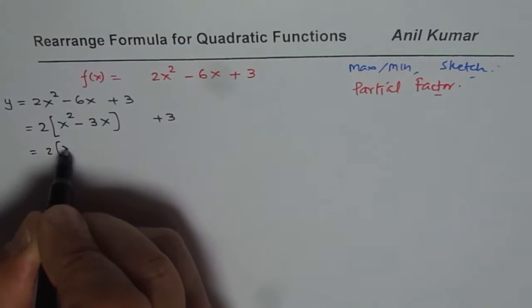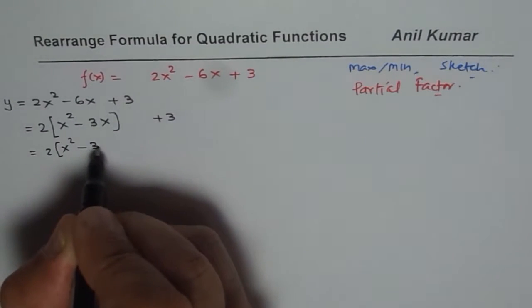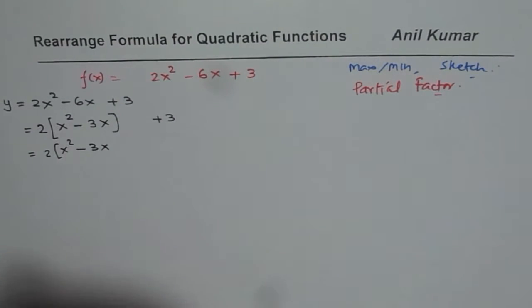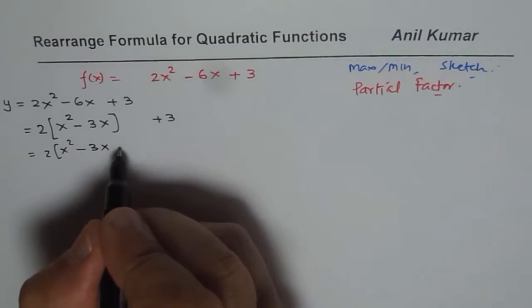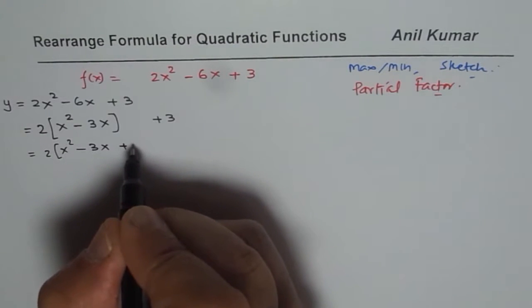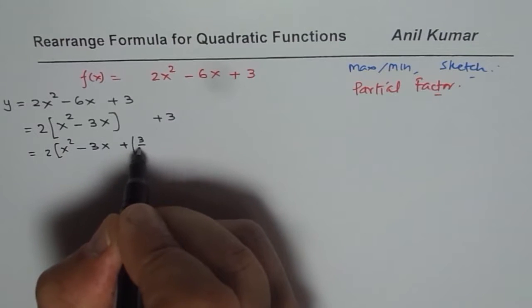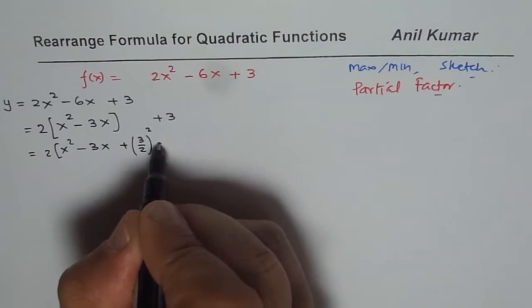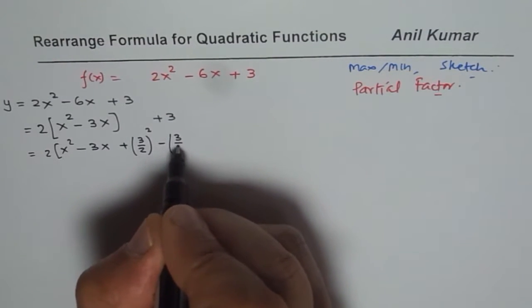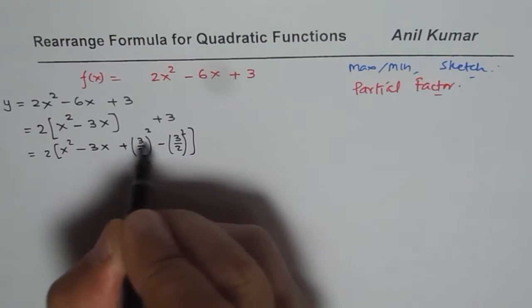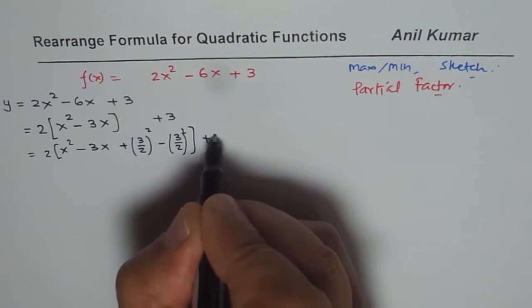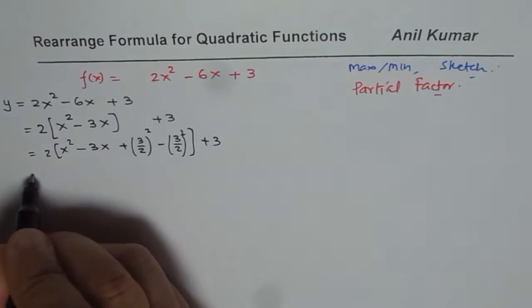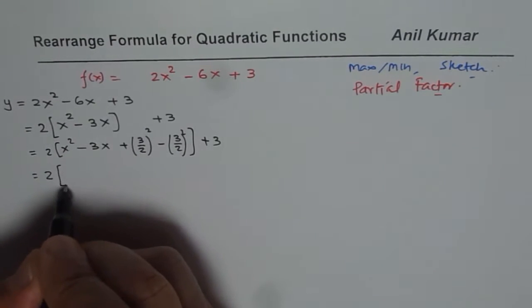Now we have x squared minus 3x. Take half of the number 3, the coefficient of x, add and subtract its square. So half is 3 over 2. Add its square and subtract its square. All this go into the bracket. Keep that number 3 away.